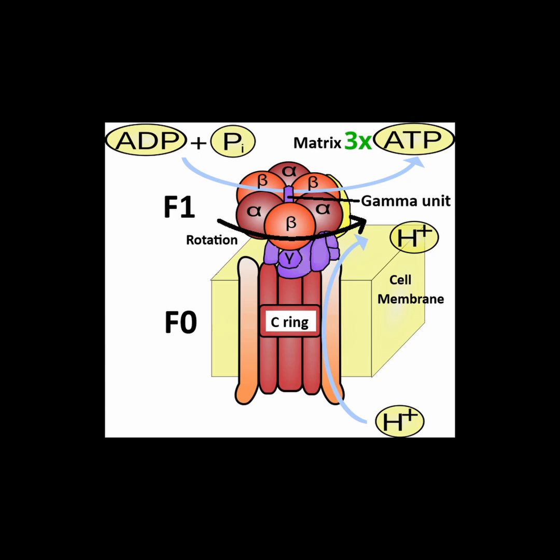Each of the ATP-making sites can be in one of three conformational states: loose, tight, and open. When in the loose state, ADP and a phosphate bind in the site. Next, in the tight state, the substrates are clamped down on to form ATP.